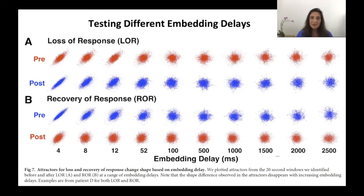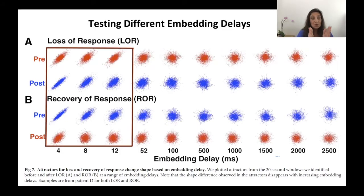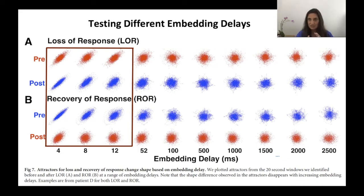We also tested different embedding delays, since the ideal delay is an empirical process. We varied the delay from four milliseconds all the way out to two thousand five hundred milliseconds. Only delays of four, eight, and twelve milliseconds were statistically significant. Beyond twelve milliseconds, the attractor shapes look almost entirely spheroidal and can no longer discriminate states of consciousness. The most reliable discriminator was at the four-millisecond embedding delay.